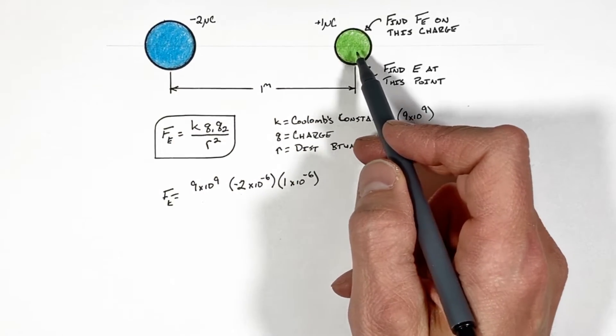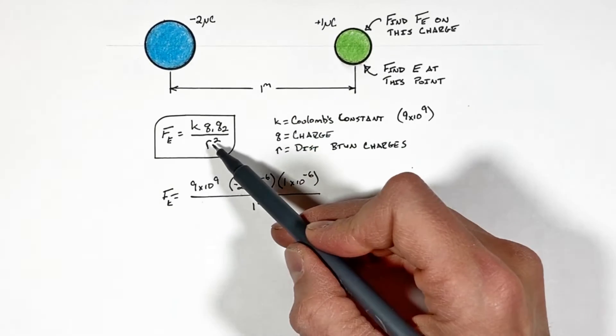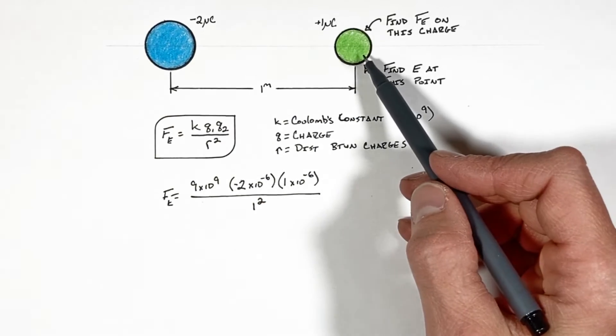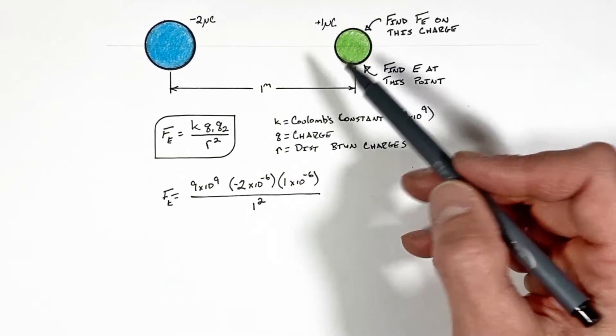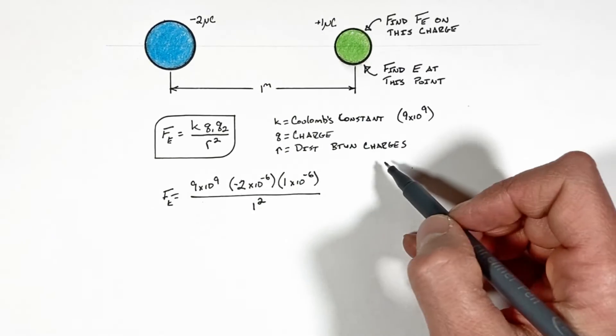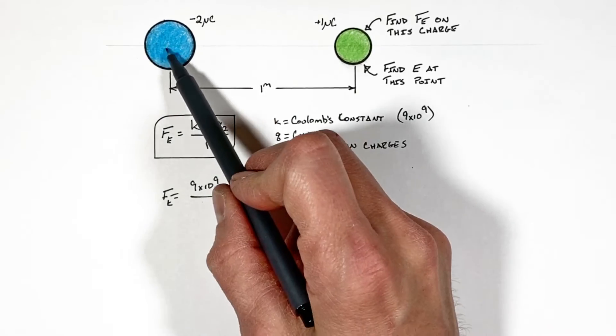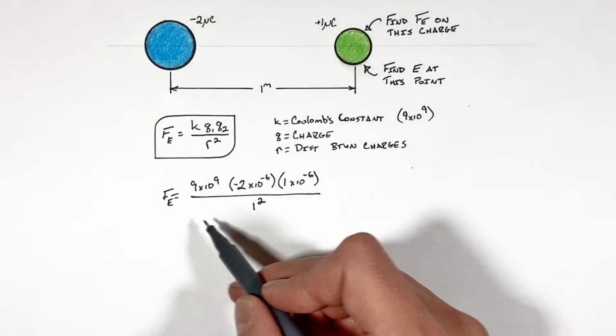Then we have our other charge, that's this positive one micro coulomb, that's one times ten to the negative sixth, and that's over the distance between our two charges which is going to be one meter. I know this is radius and sometimes that can be confusing because people start to wonder whether or not they need to take this distance and divide it by two like you would in looking at the diameter versus radius of a circle, and that's not true.